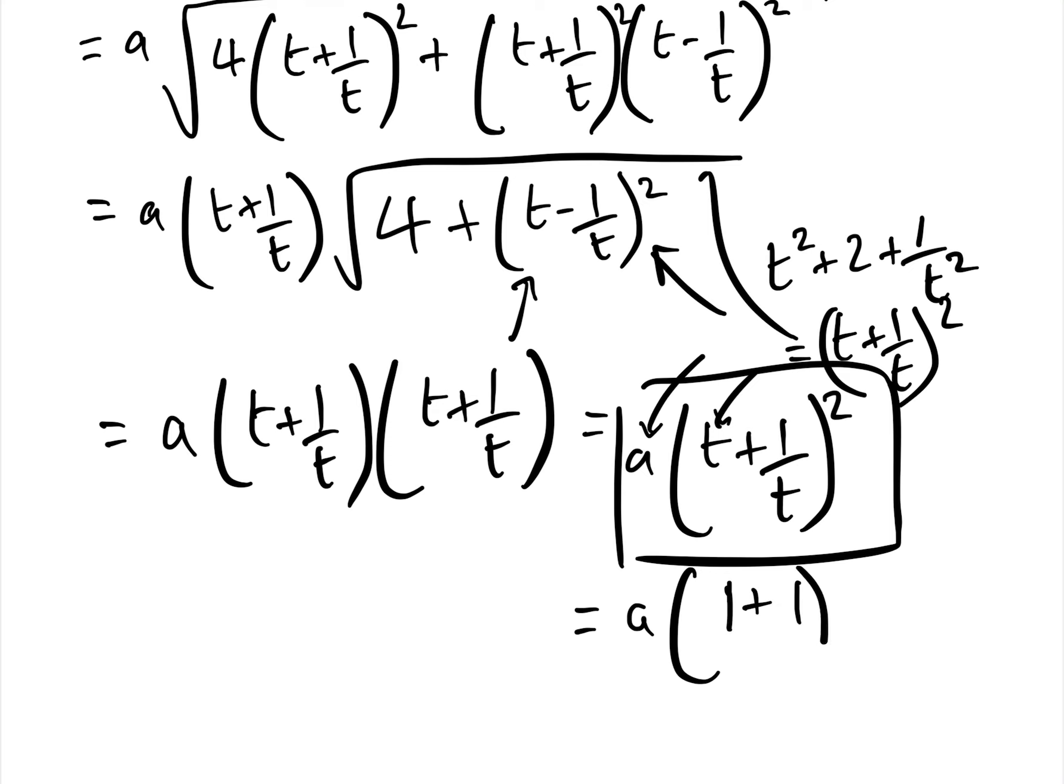because looking at our parametric equation here, p dash would be when t equals 1, and if we go into our formula down here that we've just proved, when t equals 1, that gives us a times 1 plus 1 squared, which equals 4a. And so that proves that the latus rectum distance is 4a.